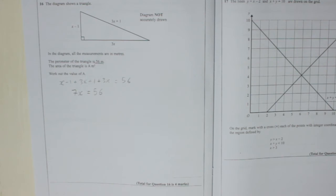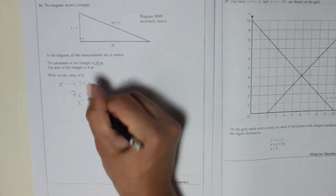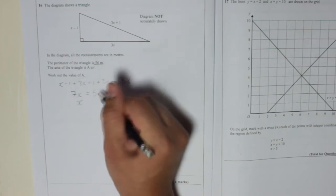Which means that x, 7x is 56, so x must be 8 because 7 times 8 is 56.